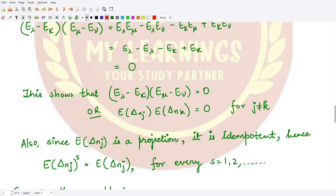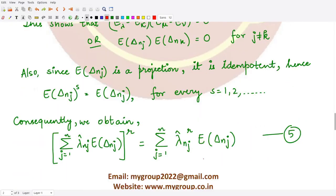Moreover, since E_Δ(n,j) is the difference of two projections, it is itself a projection. Being a projection, it is idempotent — so any power of it gives back the same projection. We have this result for s = 1, 2, and so on.